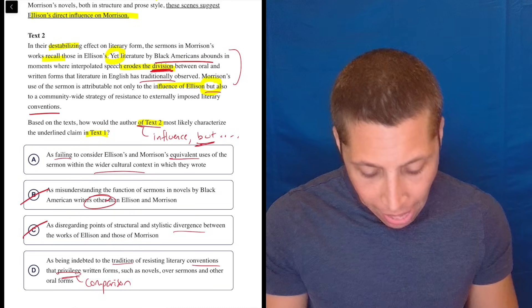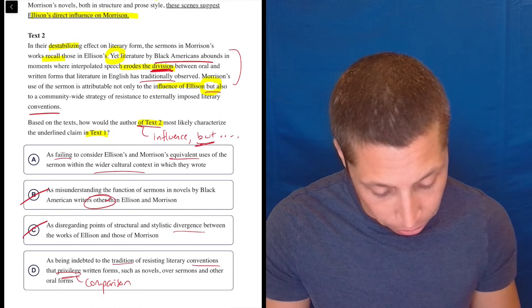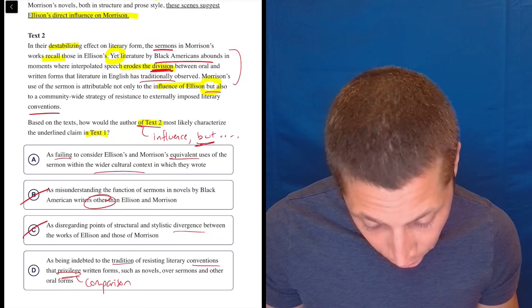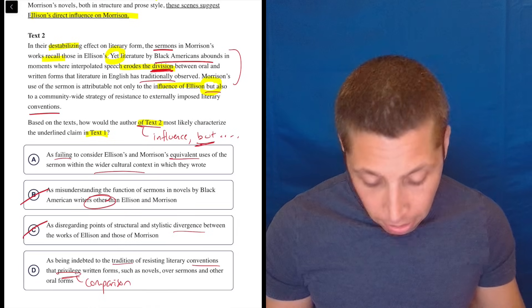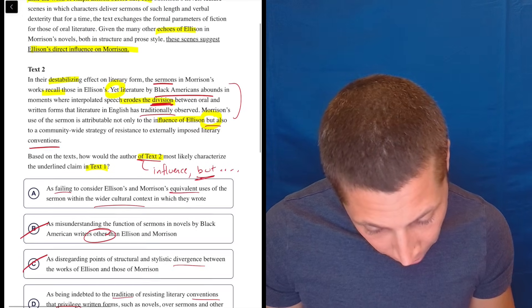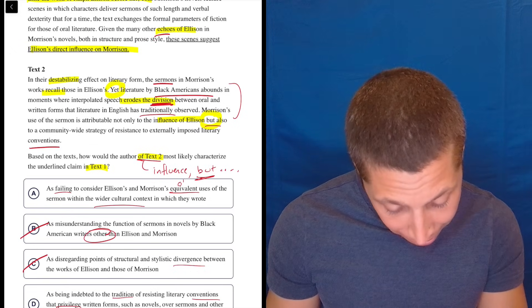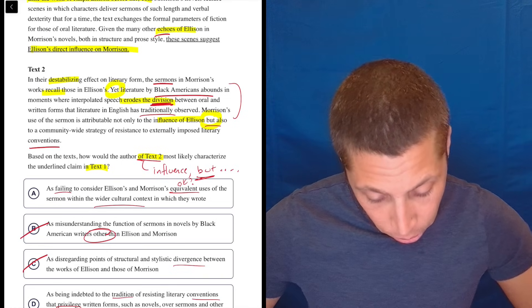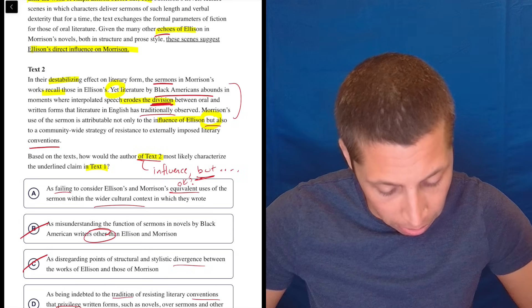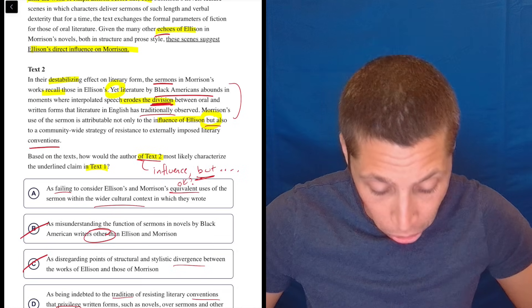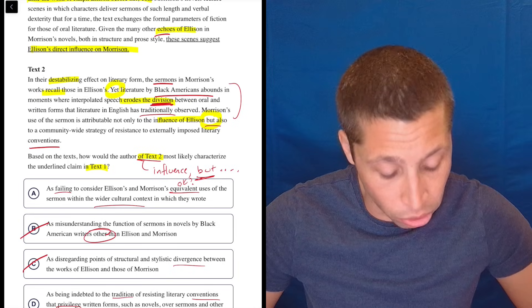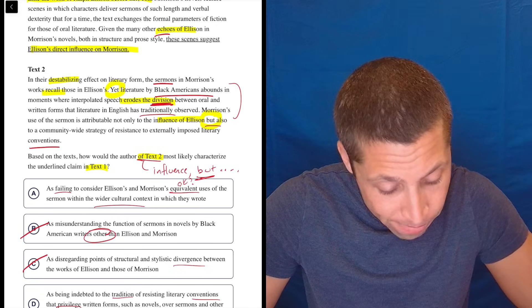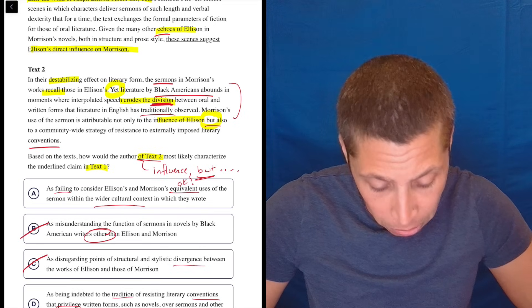Let me go back to A. Maybe I can try to understand that better. As failing to consider Ellison's and Morrison's equivalent uses, oh, I still hate that word, of the sermon. So did they both use a sermon? Let's see. Yes. In their destabilizing effect on literary form, the sermons and Morrison's works recall those in Ellison's. I don't love equivalent, but that, within the wider cultural context in which they wrote. So are they talking about a wider cultural context? Let's focus on those buts. Yet literature by black Americans abounds in moments where interpolated speech erodes the division between oral and written forms that literature in English has traditionally observed. So is that a wider cultural context of being black American literature? Maybe. Let's continue.